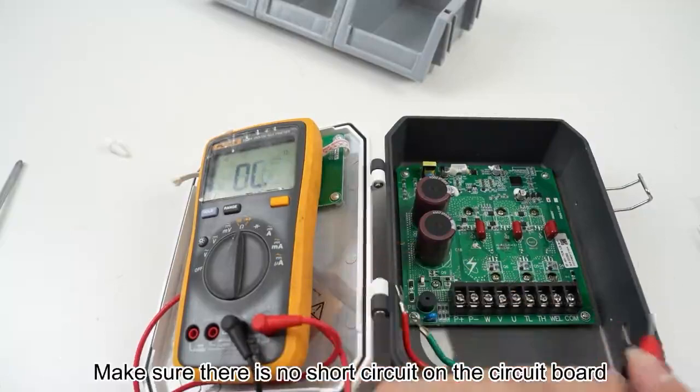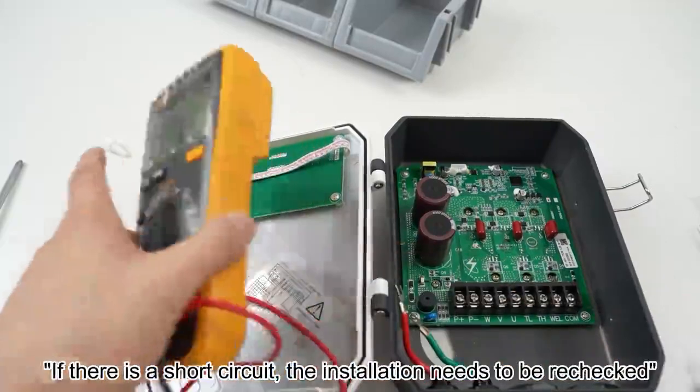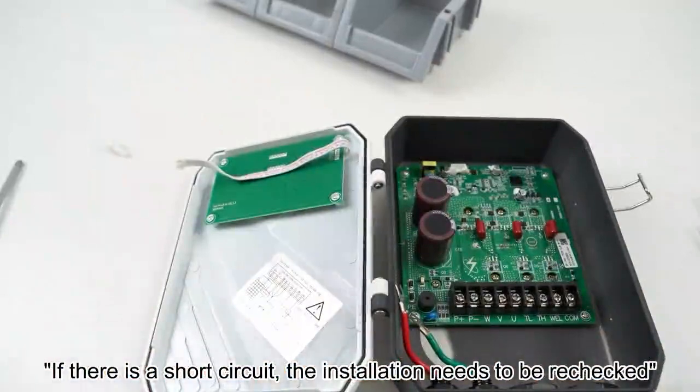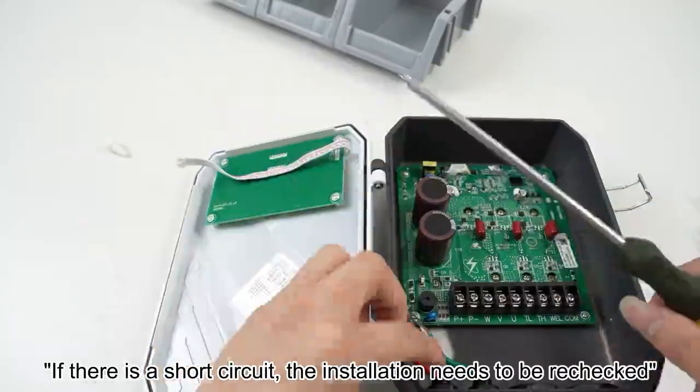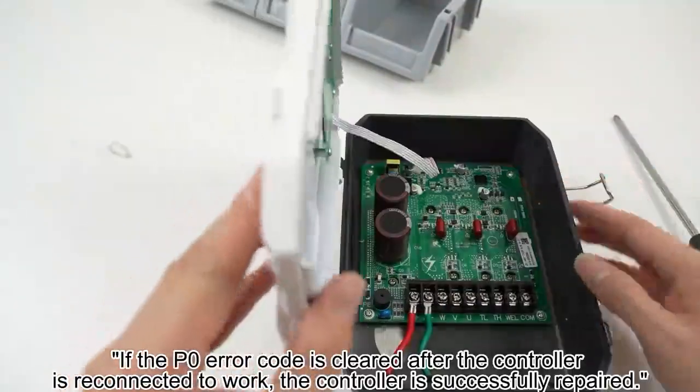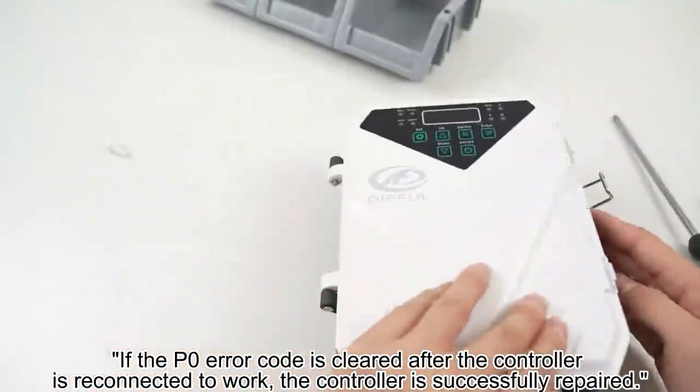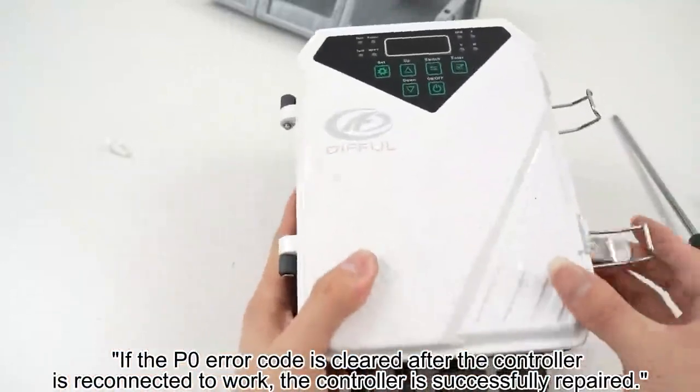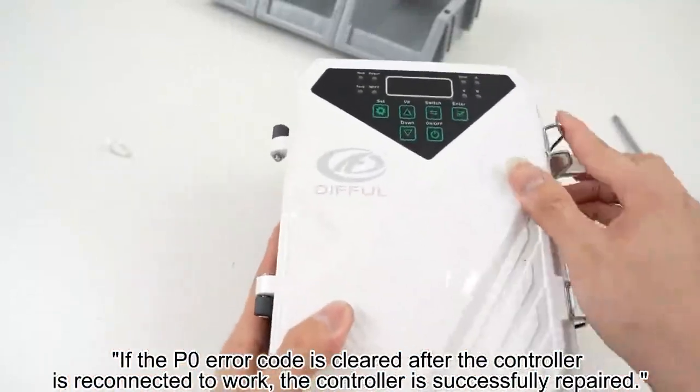Make sure there is no short circuit on the circuit board. If there is a short circuit, the installation needs to be rechecked. After checking, reconnect the corresponding terminals. If the P0 error code is cleared after the controller is reconnected and working, the controller is successfully repaired.